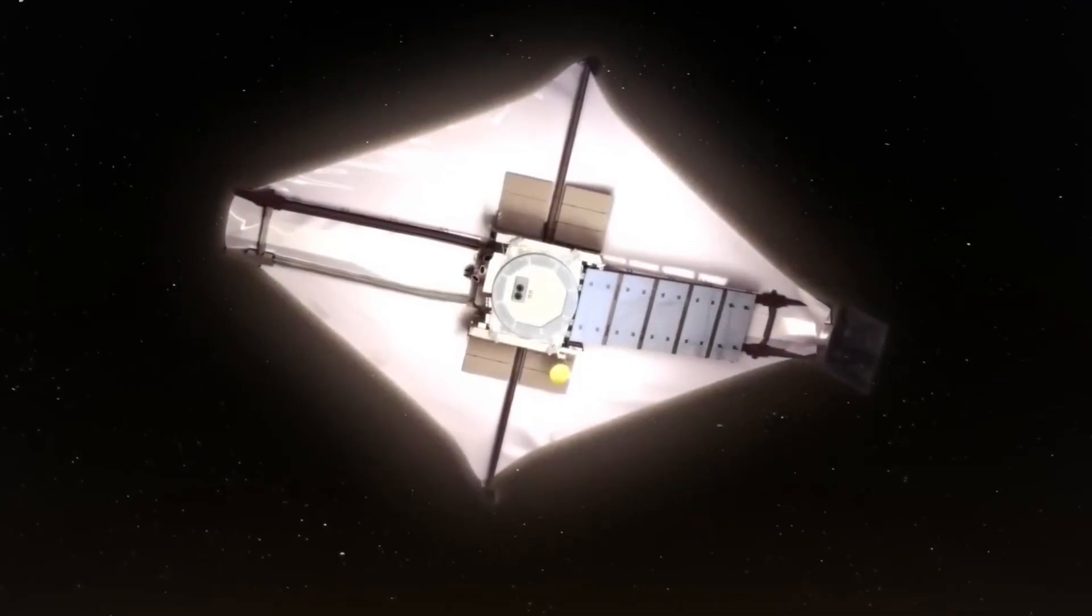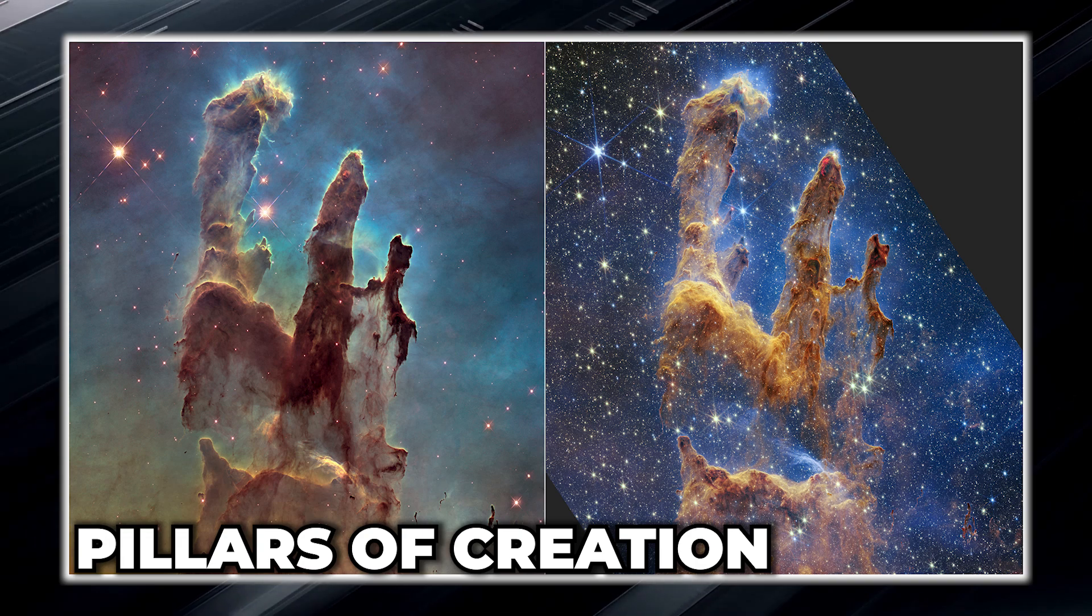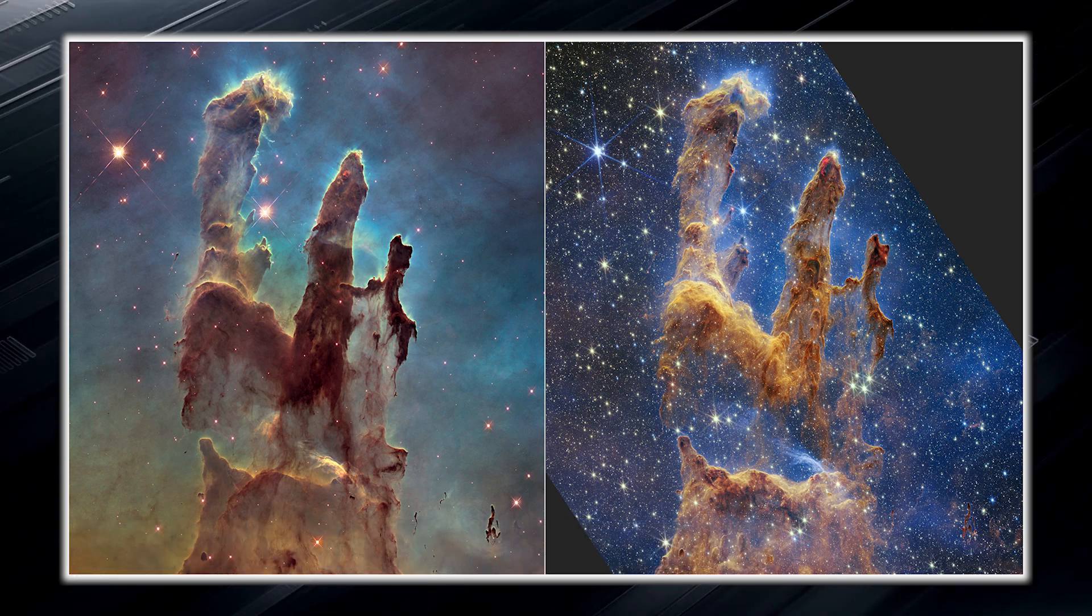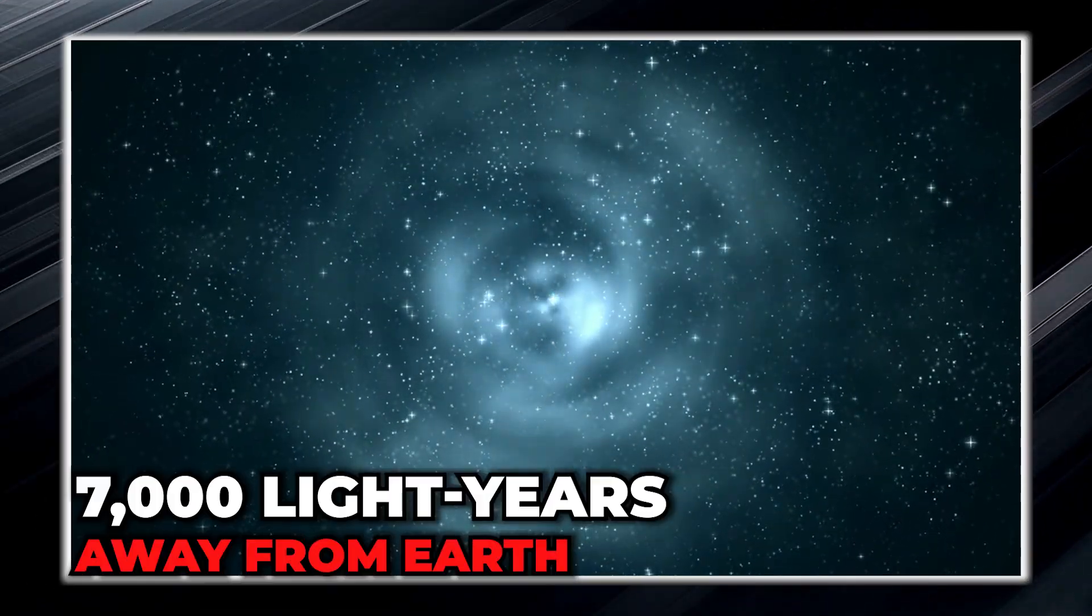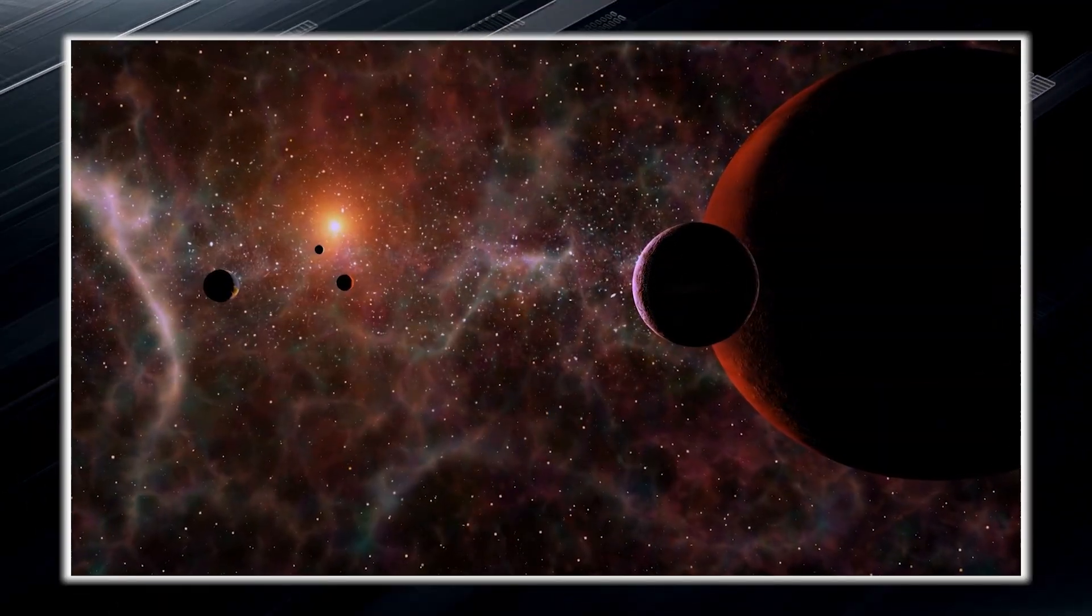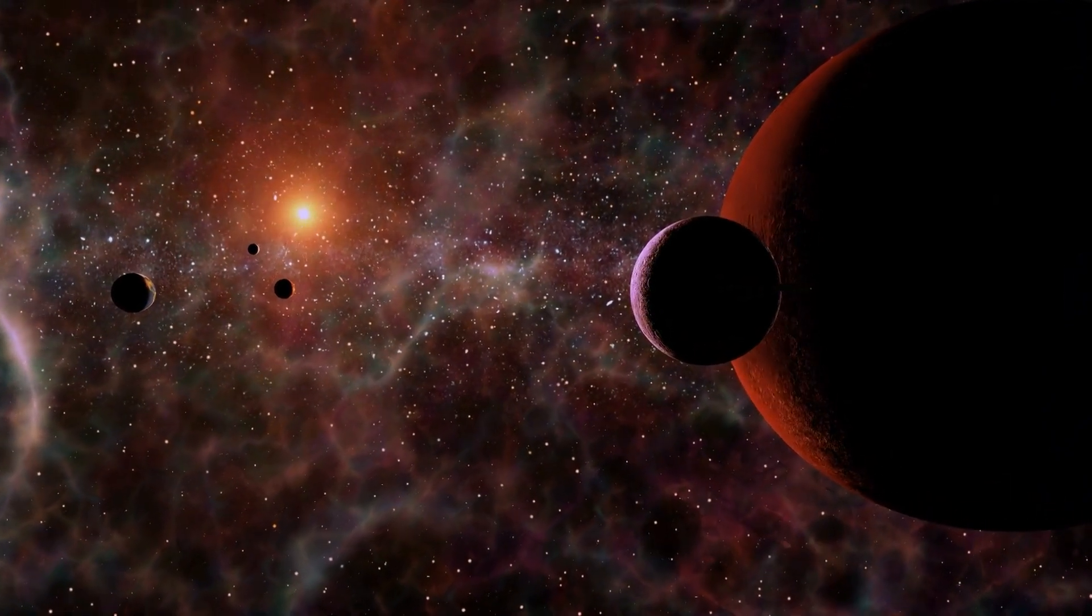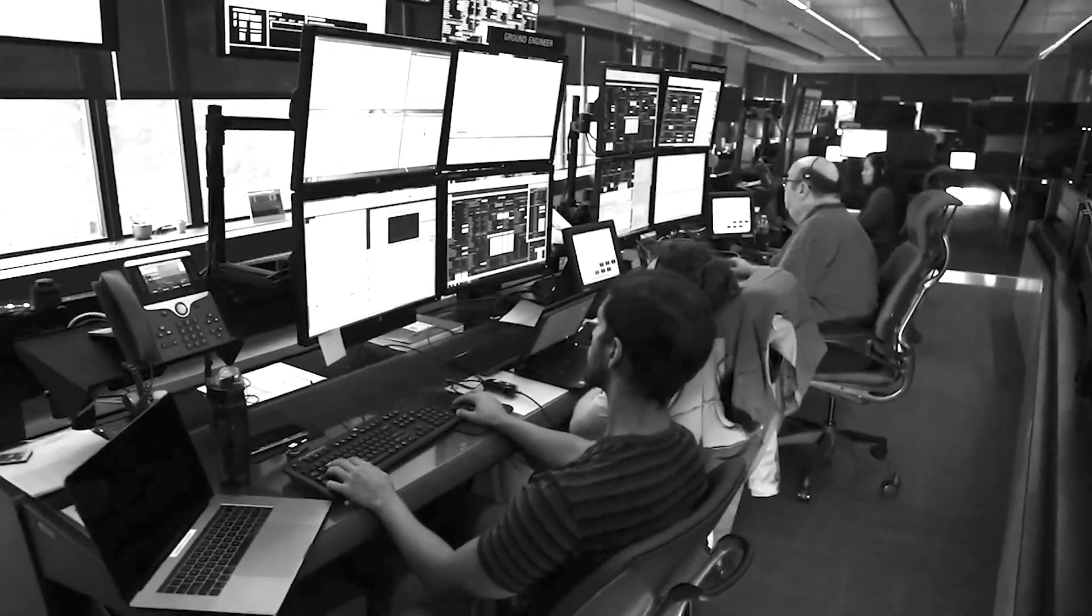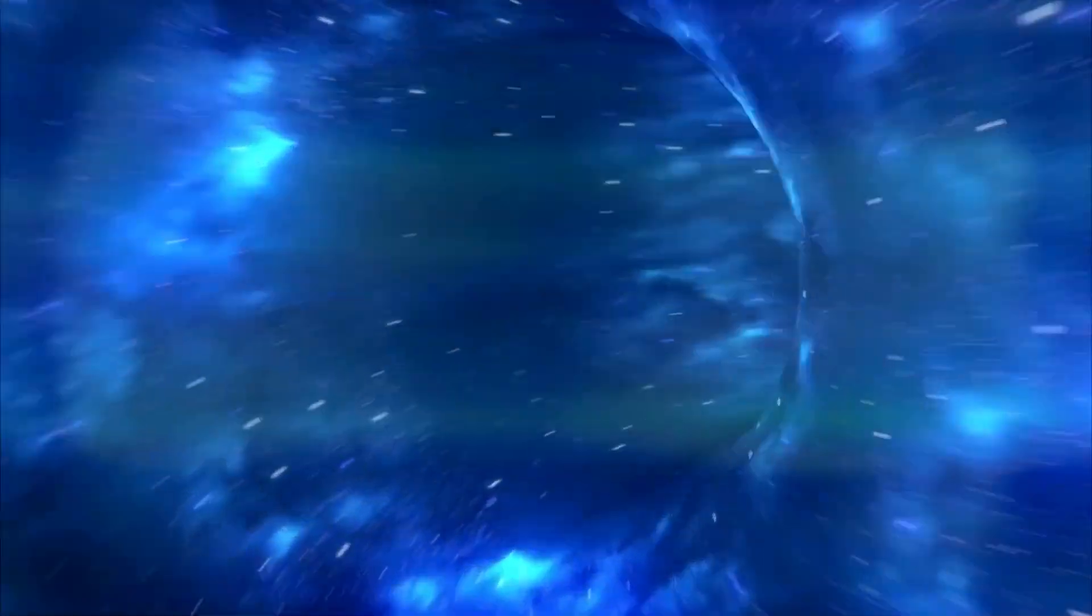When the James Webb turned its instruments toward the iconic Pillars of Creation, it captured the famous dust clouds in incredible detail. These pillars are located in the constellation Serpens, about 7,000 light years away from Earth. The Pillars of Creation are part of the Eagle Nebula, large clouds of gas and dust that were first photographed by the Hubble Space Telescope in 1995. Since then, the extraordinary beauty of the pillars has been revealed.